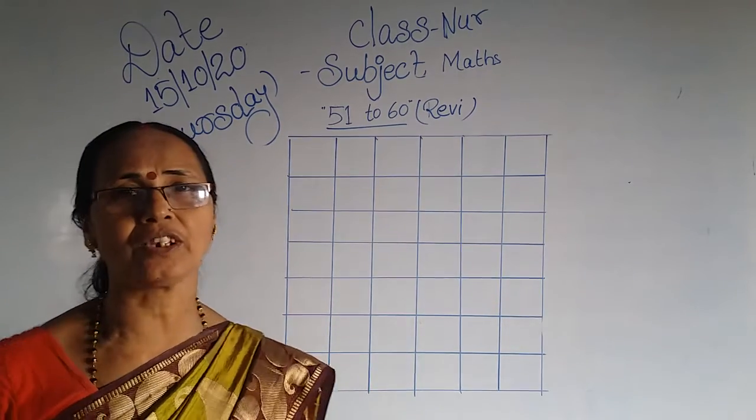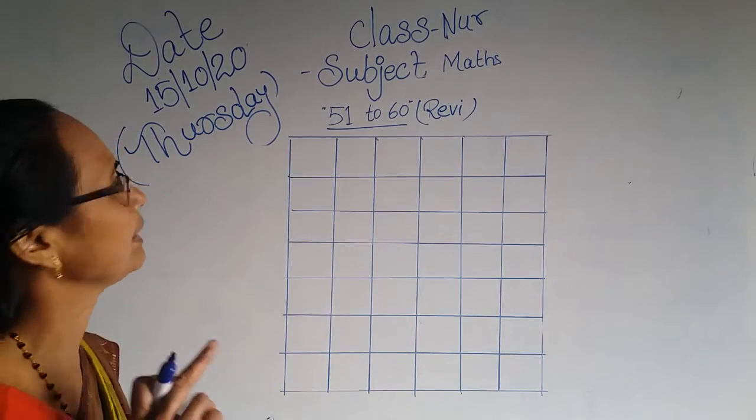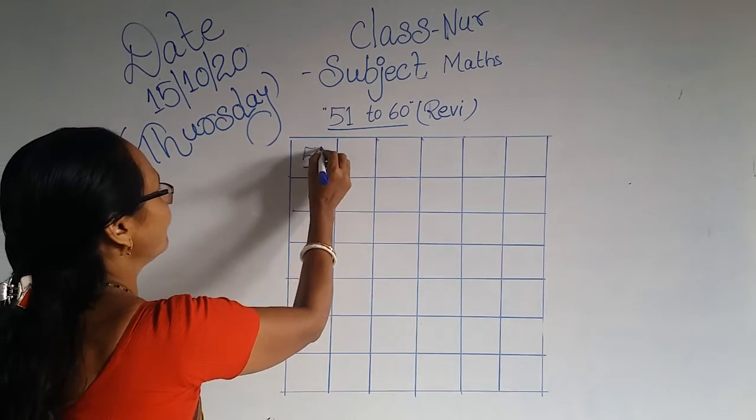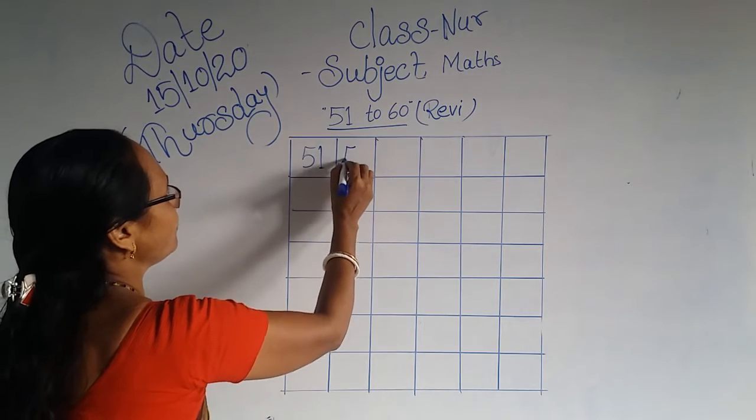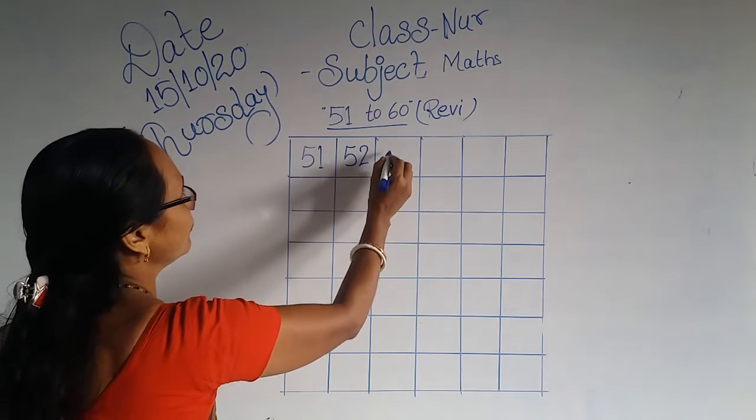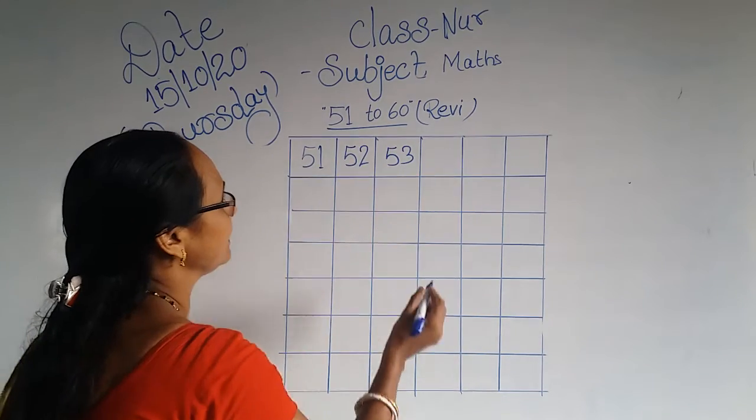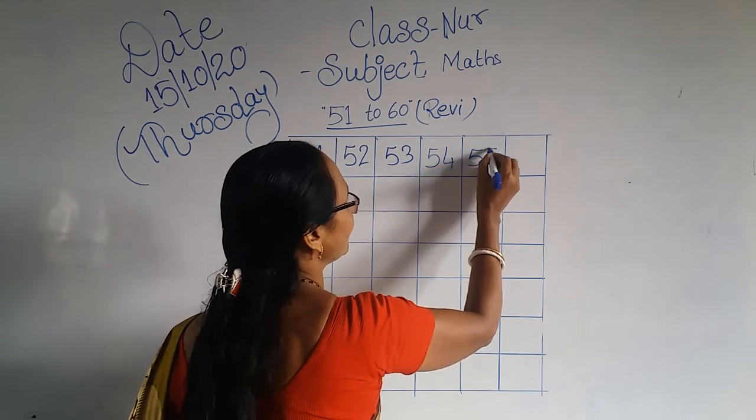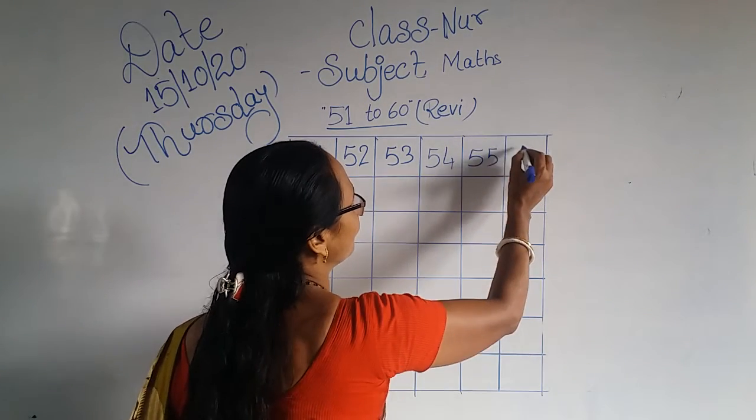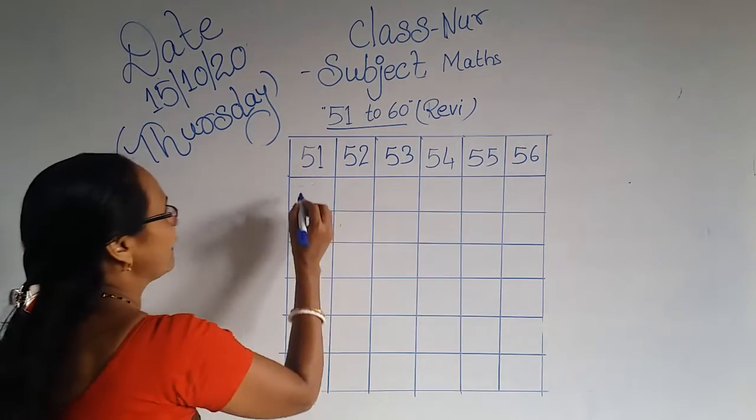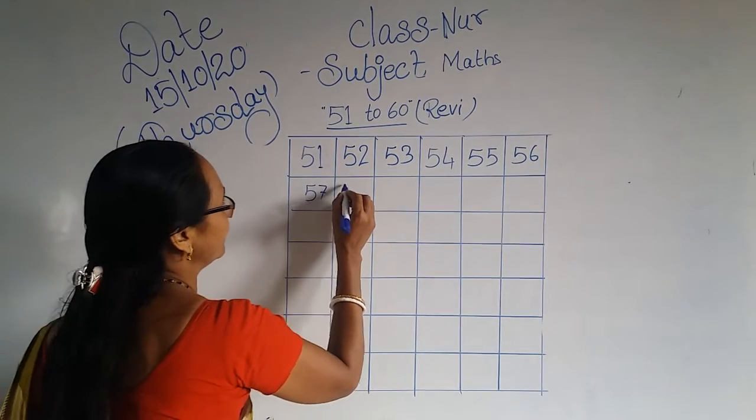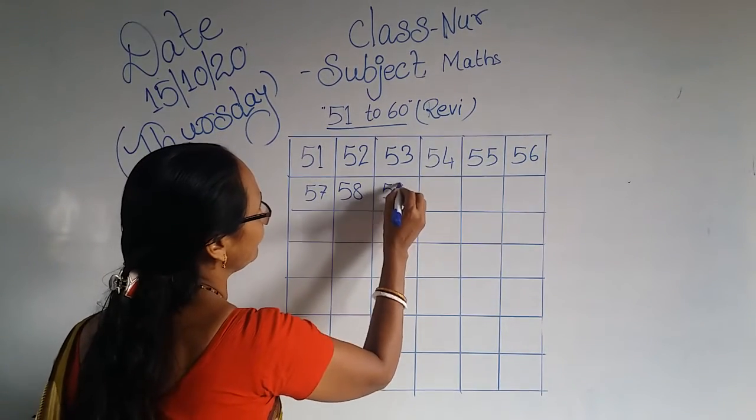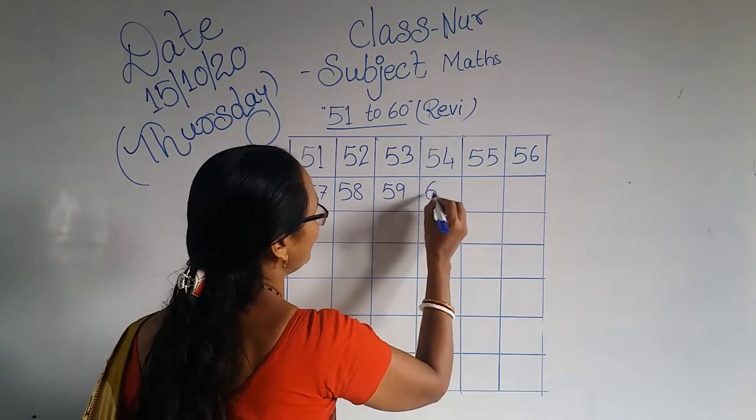Numbers taking a ribbon at 51 to 60. Now I am teaching 51, 52, 53, 54, 55, 56, 57. 5, 8, 58. 5, 9, 59. 6, 0, 60.